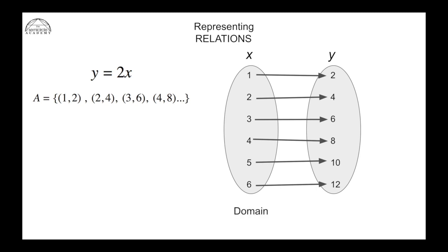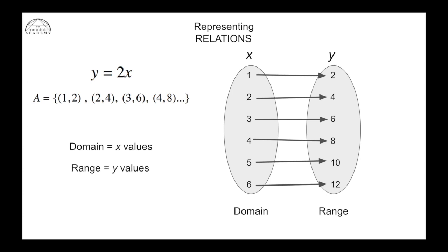The x values we usually call the domain and the y values we usually call the range. The domain contains all of the x values — those are the first number in each ordered pair, shown here in the red circles. The range is the second number in each ordered pair, shown in the blue circles.